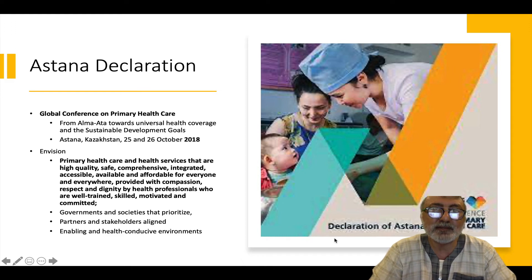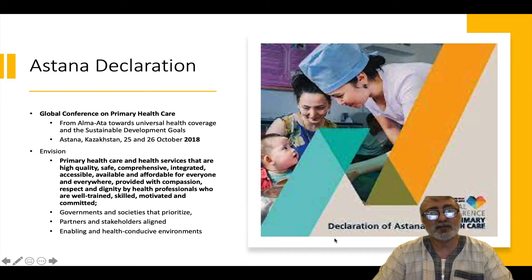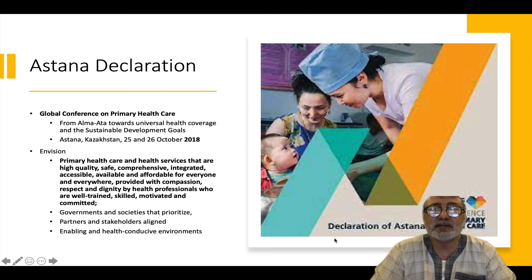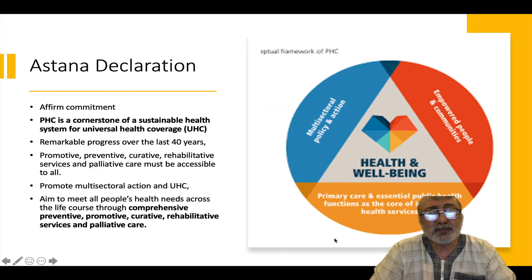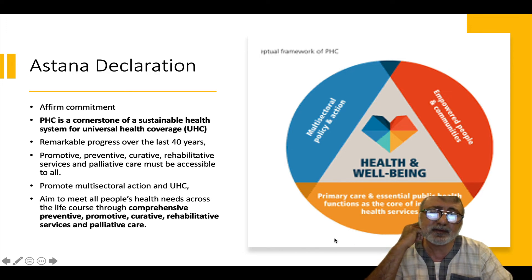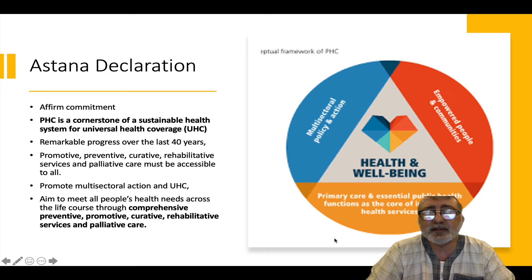The Astana declaration still envisions primary health care that is high-quality, safe, comprehensive, integrated, accessible, available and affordable for everyone and everywhere, provided with compassion, respect and dignity by health professionals who are well-trained, skilled, motivated and committed. It speaks of UHC and specifically that primary health care is a cornerstone of sustainable health systems for universal coverage. In the conceptual framework around the Astana declaration, primary health care and essential public health functions are the core of integrated health systems to provide health and wellbeing.